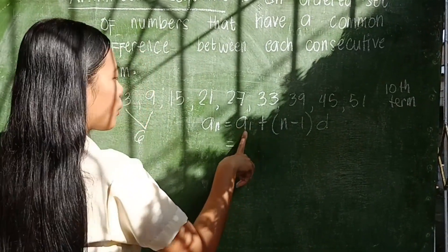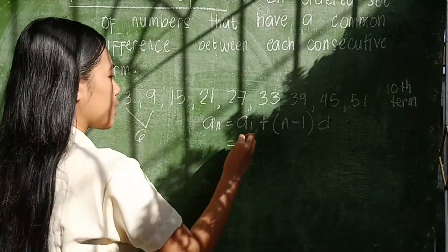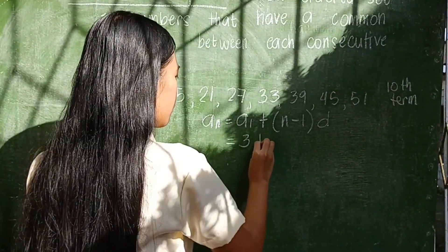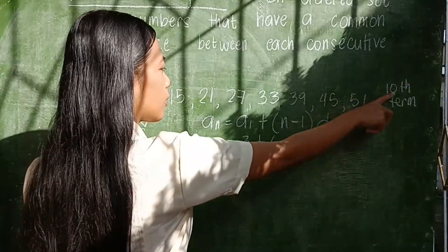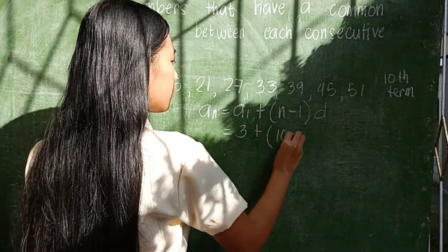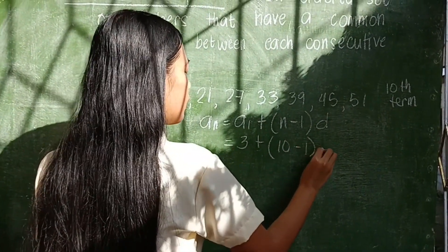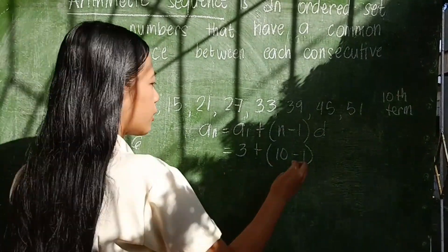And then, this one is the first term, the number 3. The tenth term, minus 1. And the common difference here, the number 6.